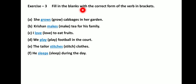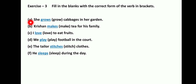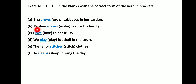Now let's proceed to Exercise 3 — fill in the blanks with the correct form of the verb in brackets. Here you have to get the first form of verb. For 'grow', since the subject is third person singular, add -s: 'grows.' Answer: 'She grows cabbage in her garden.'